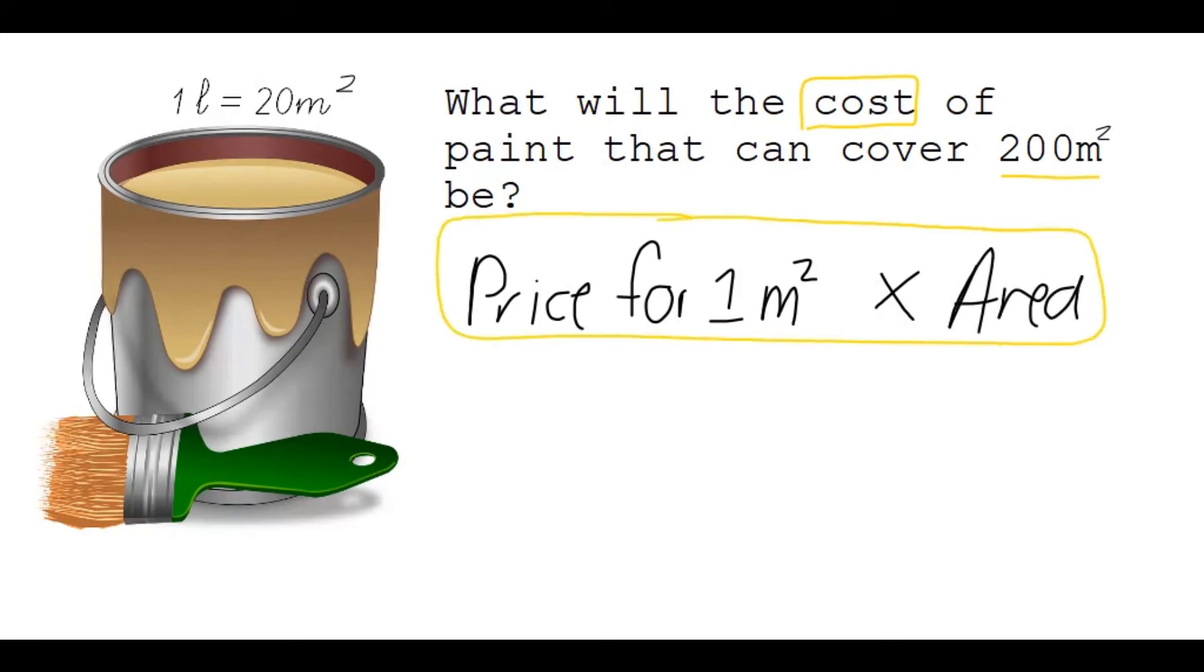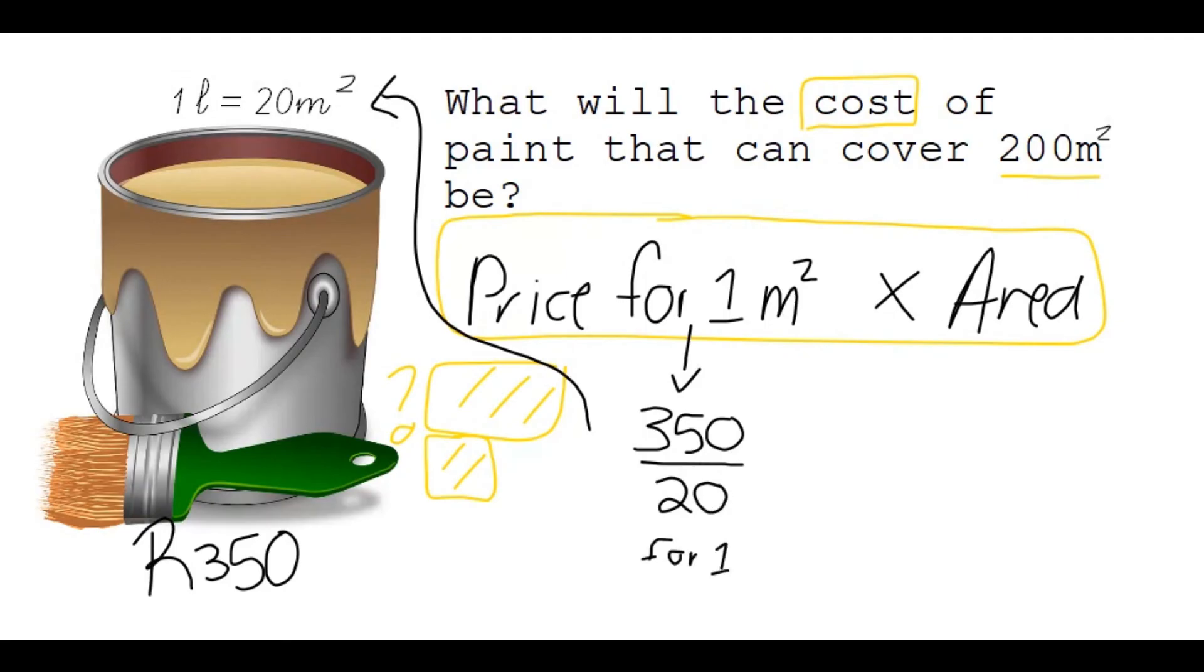Think about it, they're basically saying here you have maybe two rooms and the area of 200 square meters and you want to know the cost to paint that. Now in our question, we are also given that this one paint tin cost 350 rand, very expensive. So the price for one square meter, if it's 350 rand for 20 square meters and I divide by that 20, I'll get the price for one square meter. Now I'm going to multiply that price by the area of 200 and I'll get an answer of 3500 rand.